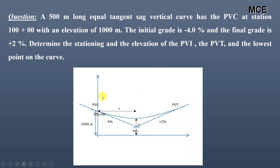You can see the figure for the question. The PVC is at a station of 100 having an elevation of 1000 meters. The initial grade is minus 4%, the final grade is plus 2%. This is the point of vertical intersection or PVI, this is the point of vertical tangency, and this here will be the lowest point of the curve. We have to find the station and elevation of all three.